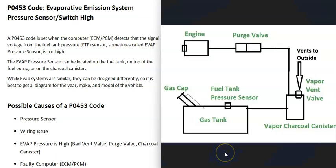Vehicles have what's called an EVAP system that takes the gas vapors from the gas tank and feeds them back up to the engine to get burnt off, so they don't escape into the atmosphere. This is for emissions. Depending on the vehicle, the year, and the make, there can be some differences in the EVAP system, so it's a good idea to get a diagram for your specific vehicle.